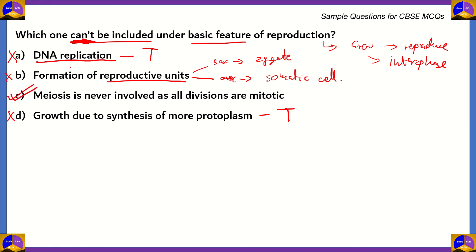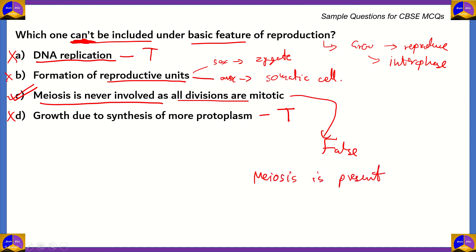The correct option — the one that cannot be included under a basic feature of reproduction — is option C: meiosis is never involved as all divisions are mitotic. This option is false. During reproduction, especially sexual reproduction, meiosis is present. We need meiosis so that the same amount of genetic material is present in the offspring, and also to form haploid organisms after the fusion of gametes. Therefore, meiosis is an integral part of reproduction, meaning the statement that 'meiosis is never involved' cannot be a basic feature of reproduction.